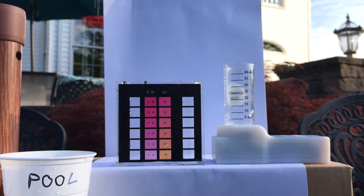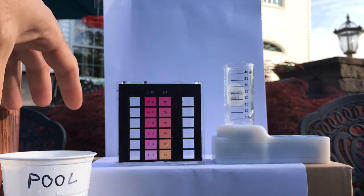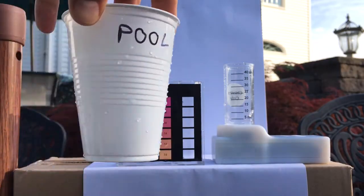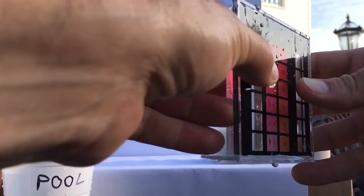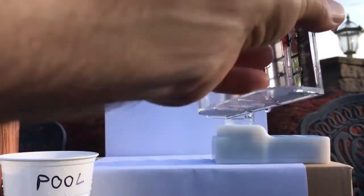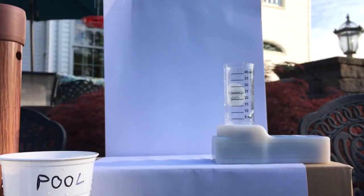So I have my pool water sample here. First we're going to fill up the DPD comparator to the appropriate level. That's a little bit high, get some out. Okay, so that's at the proper level now.